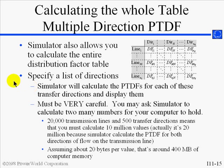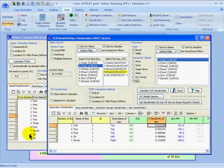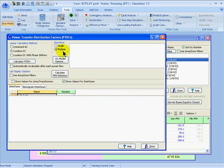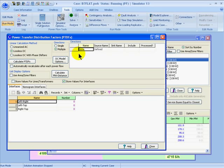You can specify a list of directions, which are basically pairs of transfers. There's a note of caution here: if you choose too many different transfer directions, it could take a long time to calculate the results and, more importantly, could require a lot of memory to store the results. In simulator, if I go back to my PTDF dialog, I have the option of choosing a multiple direction PTDF by selecting this button. Then in this section, I can insert different transfer directions.